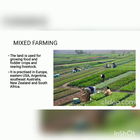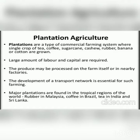In mixed farming, land is used for growing food and fodder crops and rearing livestock. It is practiced in Europe, Eastern USA, Argentina, Southeast Australia, New Zealand, and South Africa.